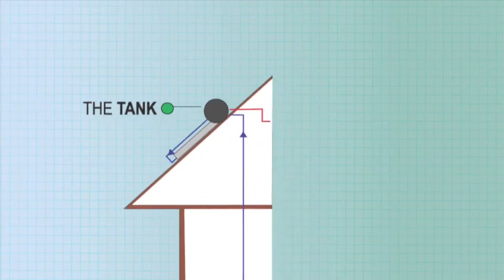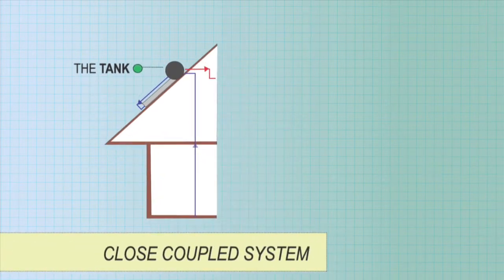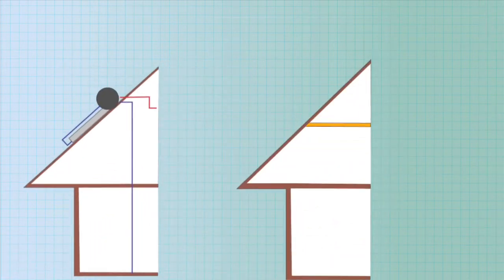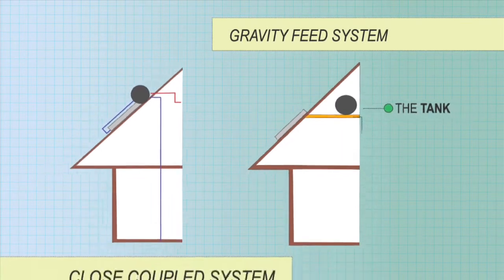The tank may sit on the roof with the collector, a close coupled system, or within the roof cavity above the collector, a gravity feed system. With these systems, the roof support structures must be strong enough to handle weights of up to 800 kg.